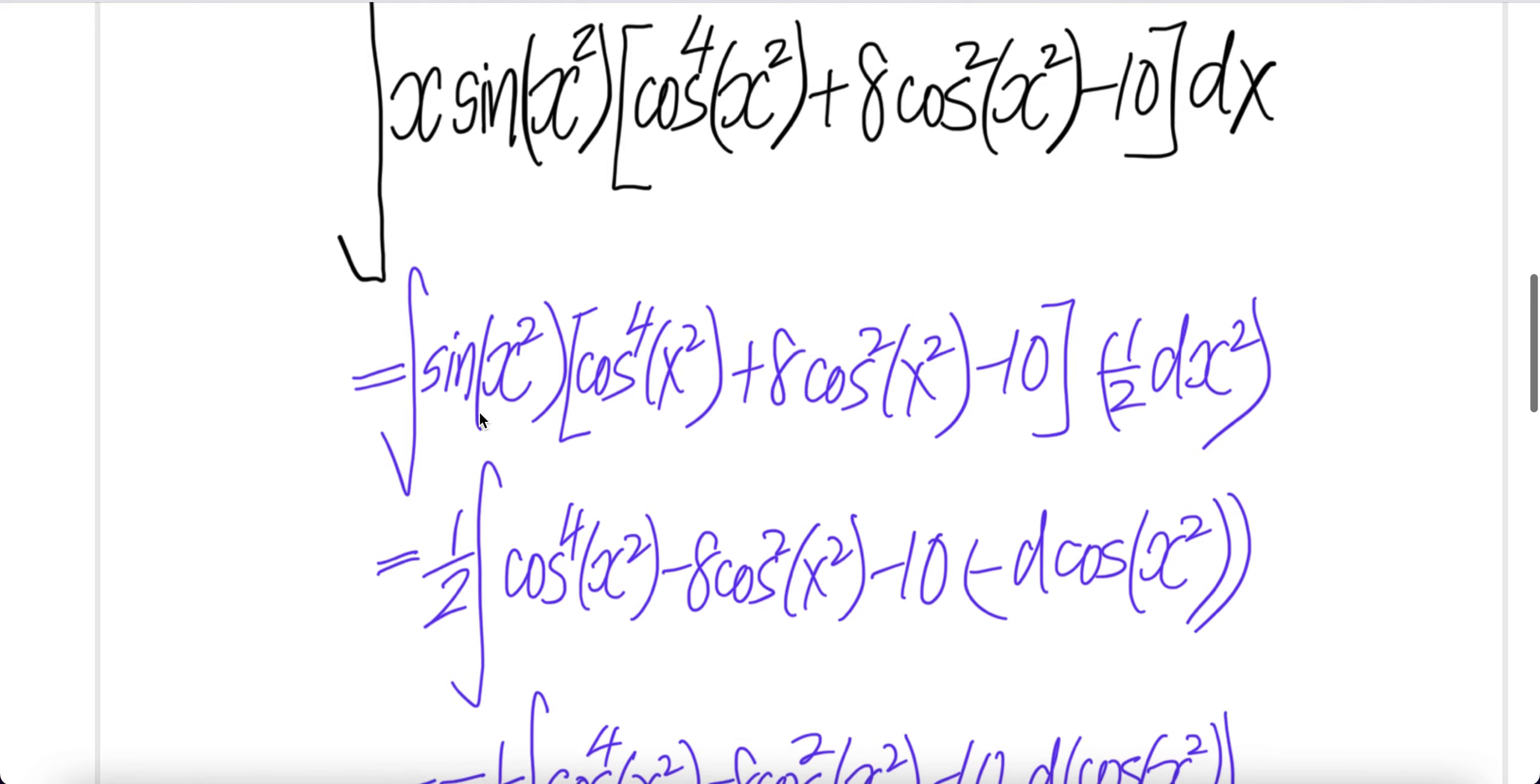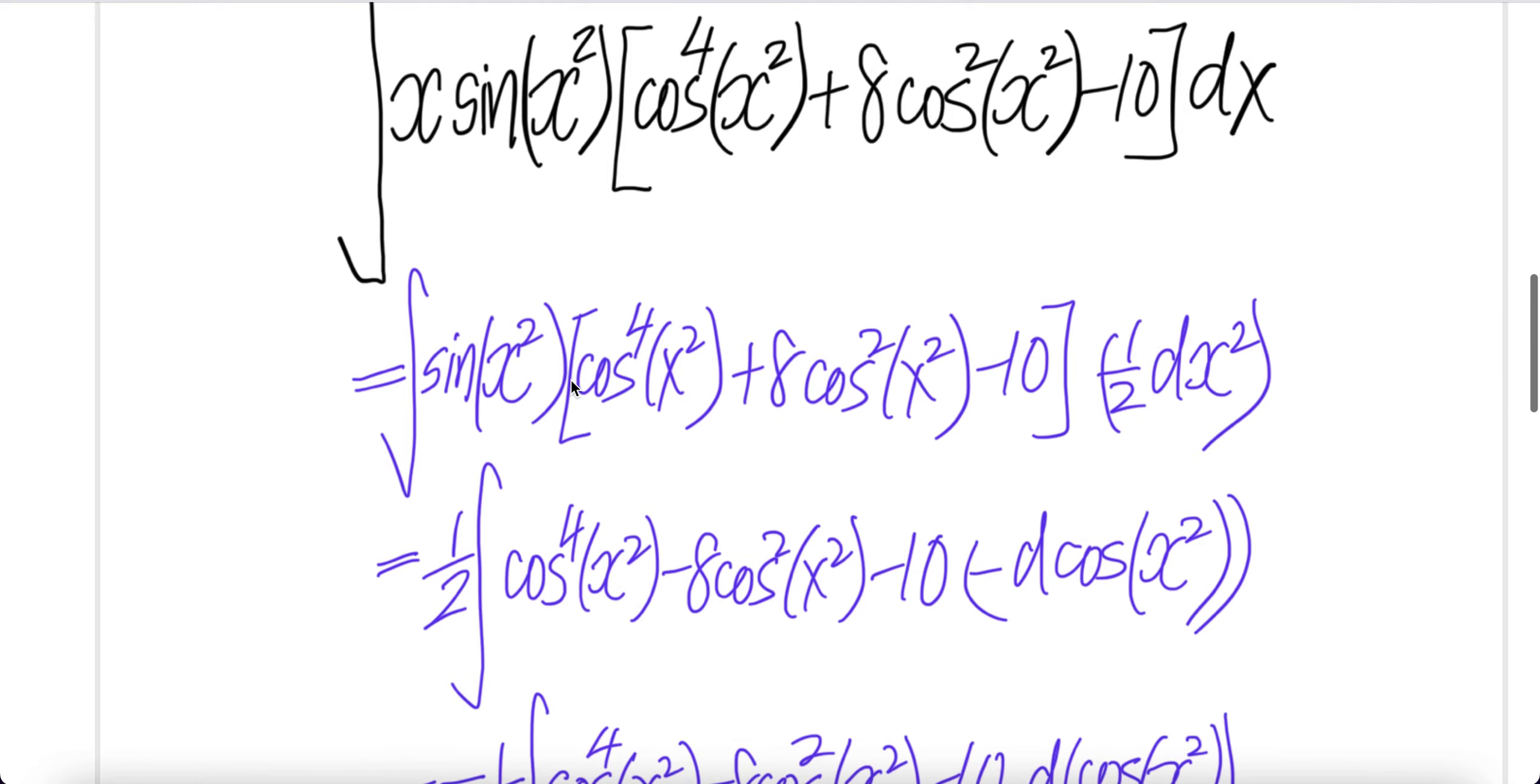Half out of the integral and then you need to push sine x squared dx squared. Push this into dx squared. You get derivative of cos is negative, negative cancel, you get sine x squared dx squared. Basically, this is the same thing as sine x squared dx squared.